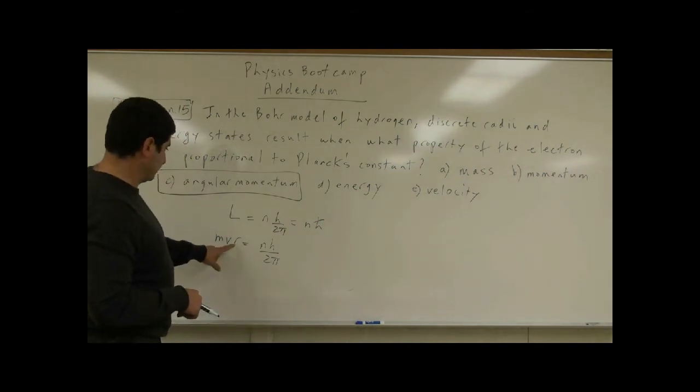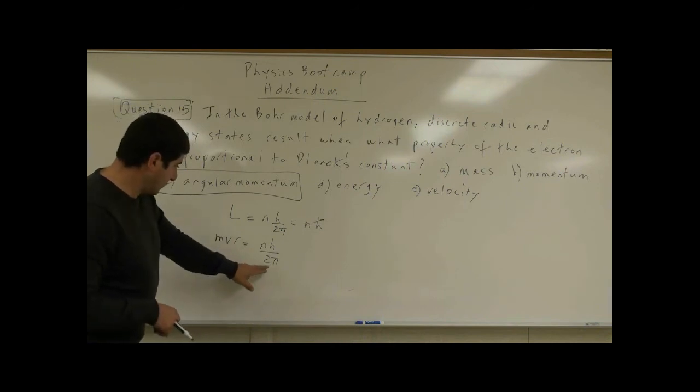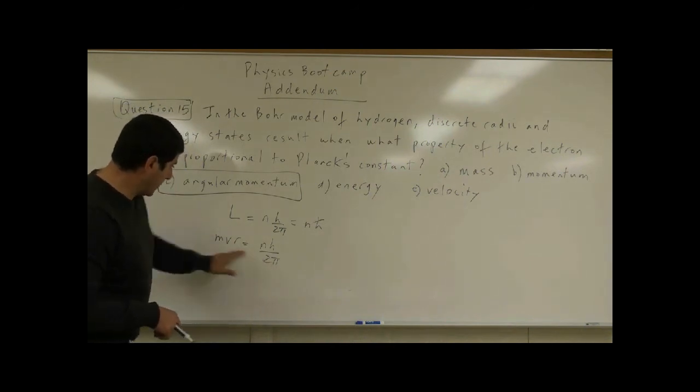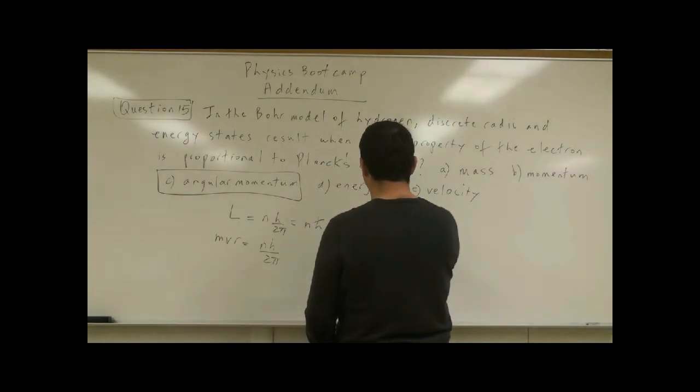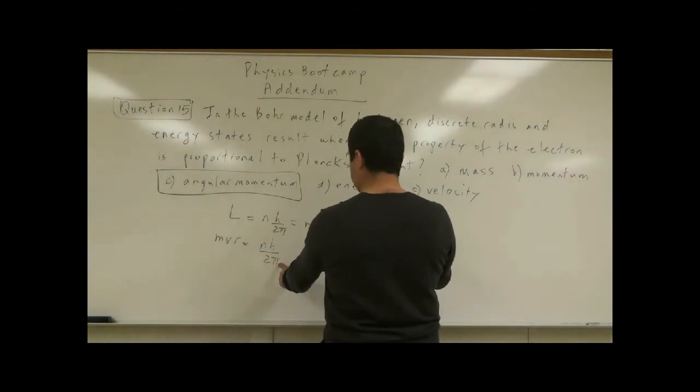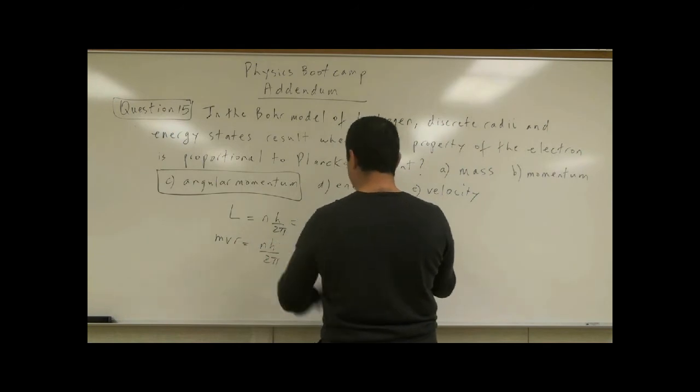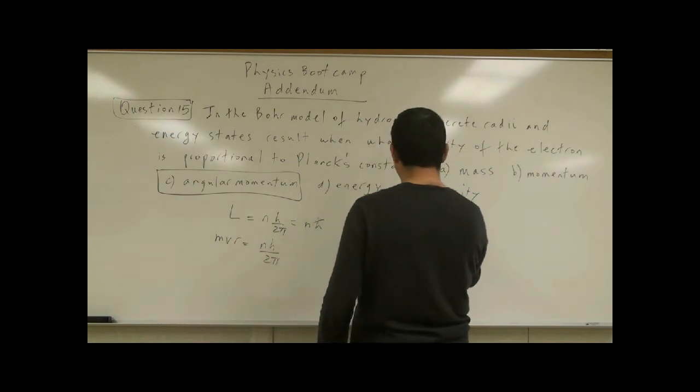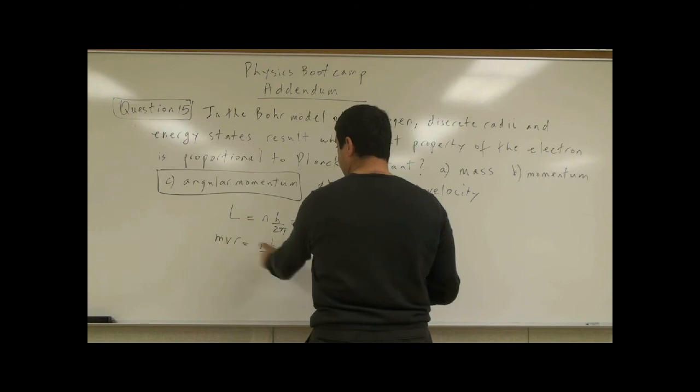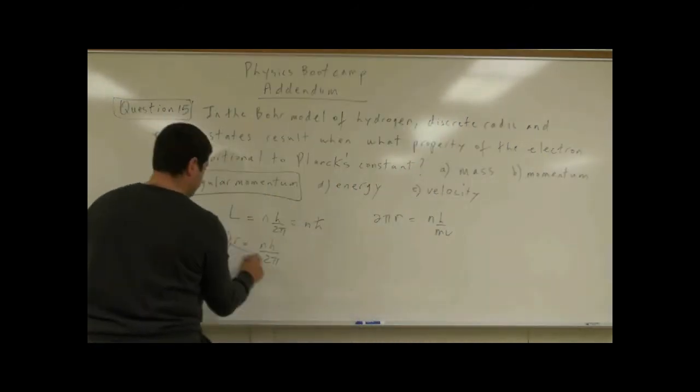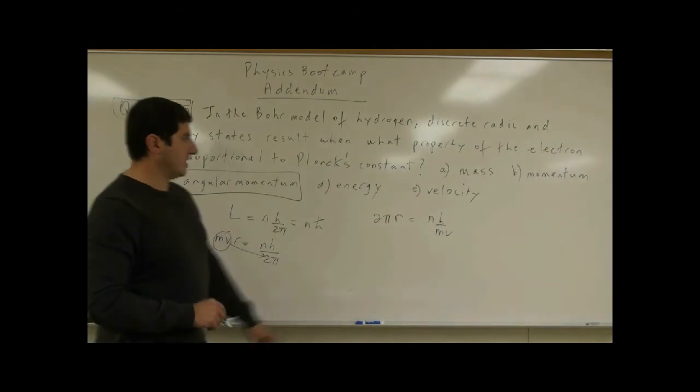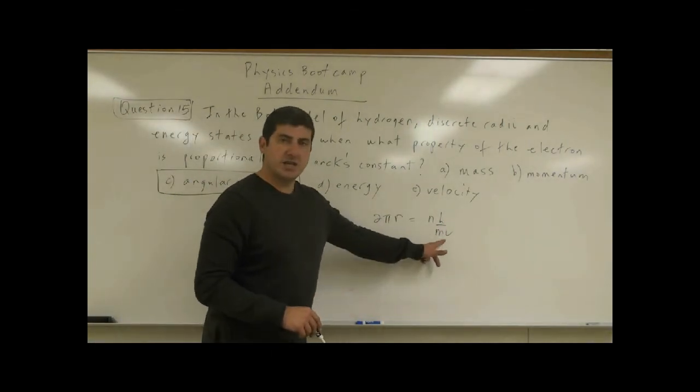If you multiply this 2π over here, what do you get? If we rearrange it, we get 2πr is equal to n h over mv. We could take this mv and put it down there, and what do we get? H over mv is h over p.